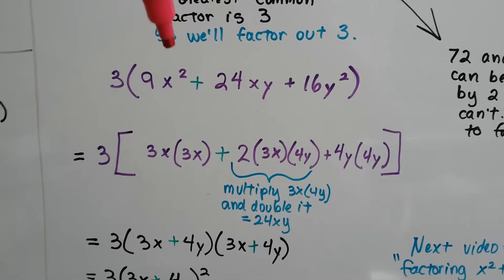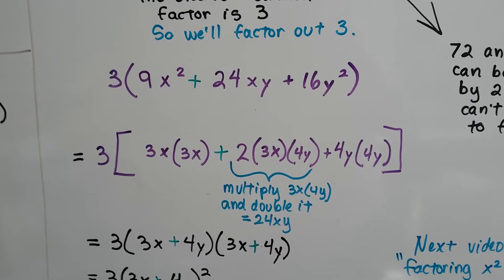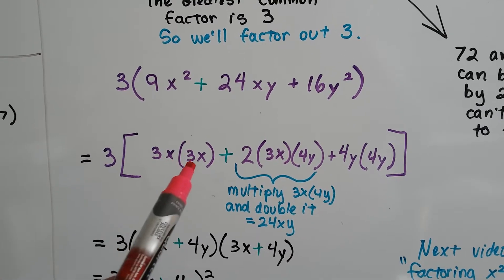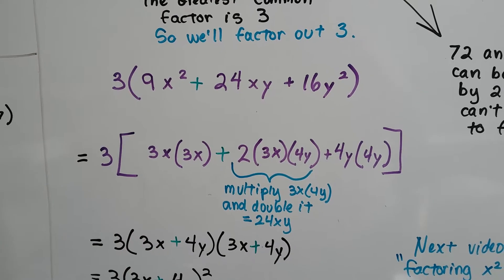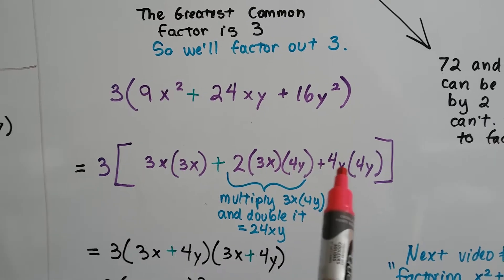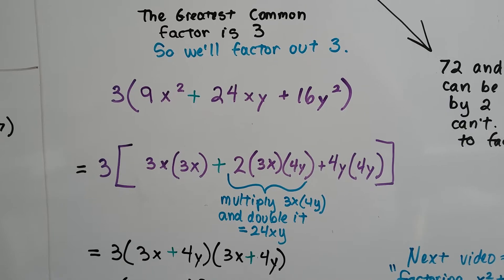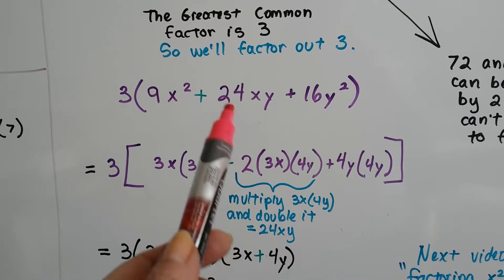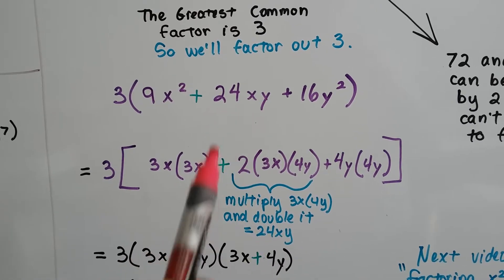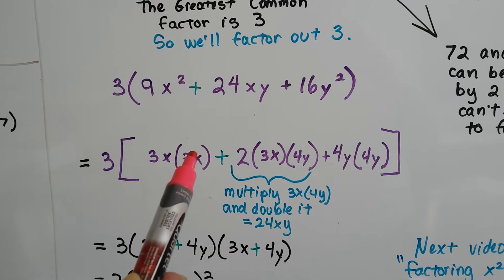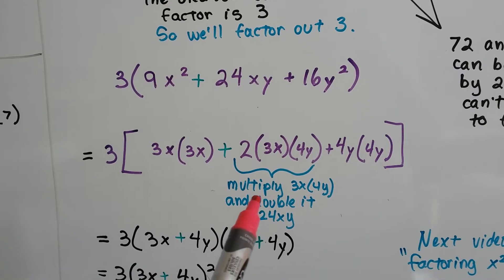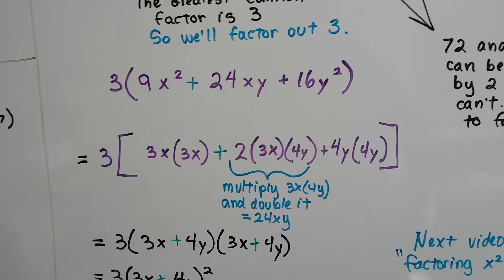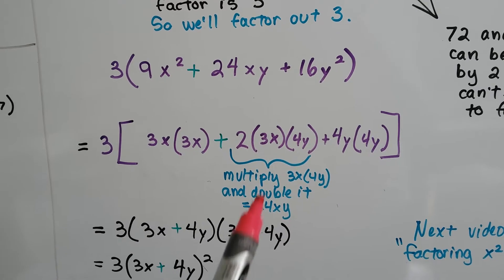Well, now we need to unsquare these. So that would be 3x times 3x to get us this 9x². And this would be 4y times 4y to get us this 16y². And to get us this 24xy, if we multiply a 3x by a 4y and double it, it'll give us that 24xy, won't it?